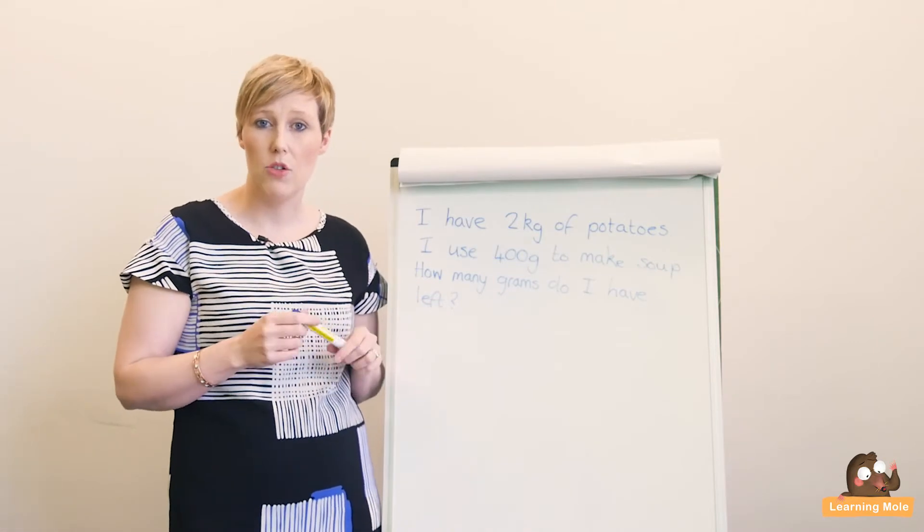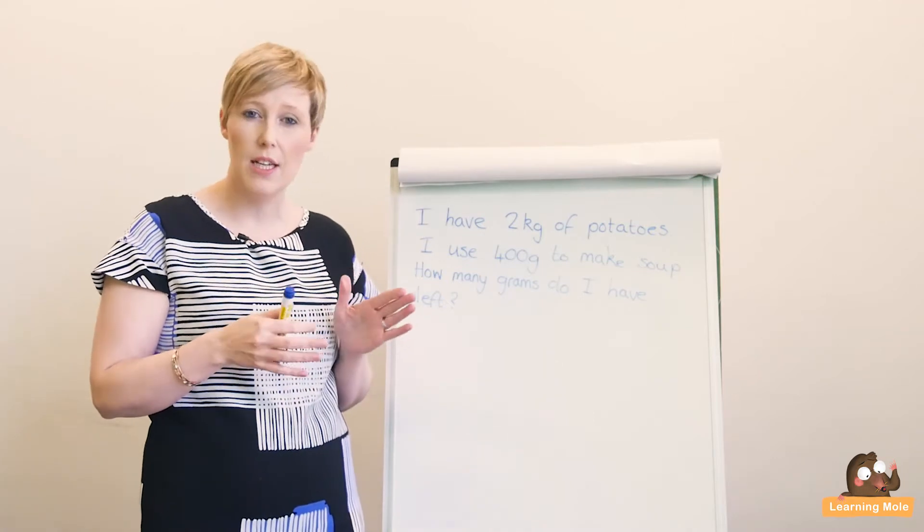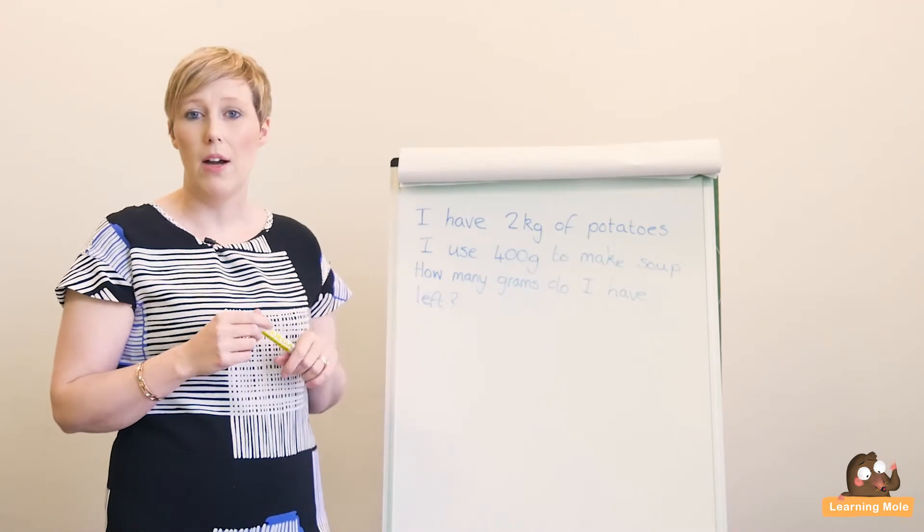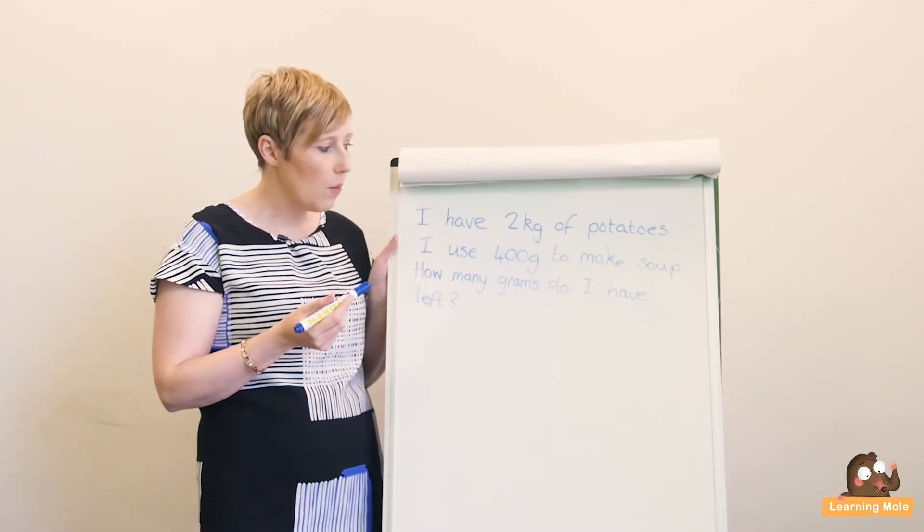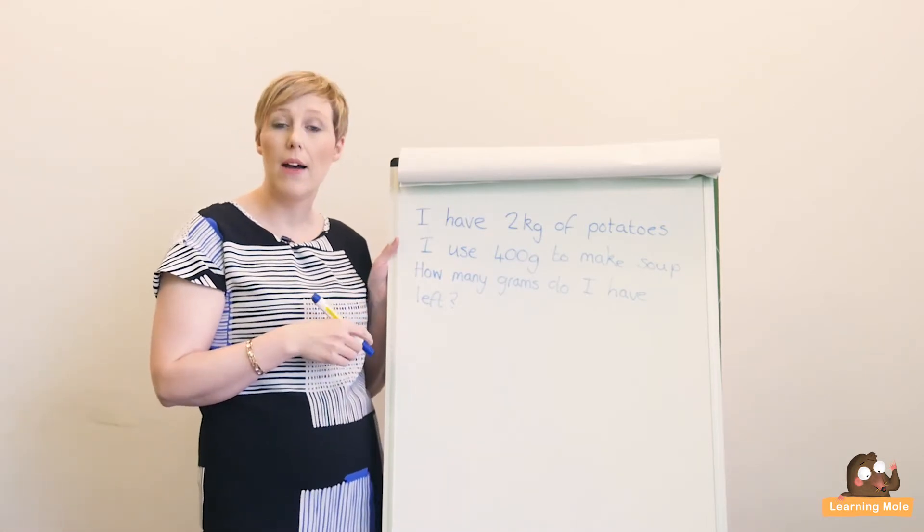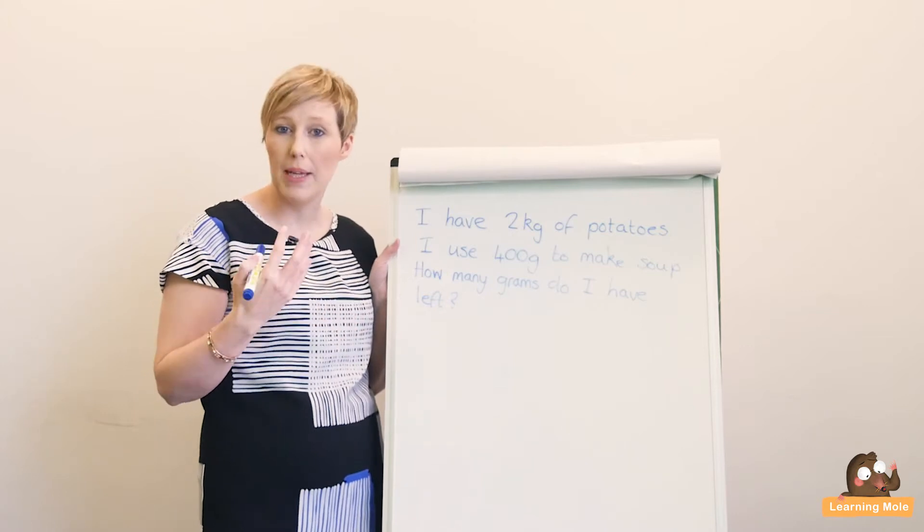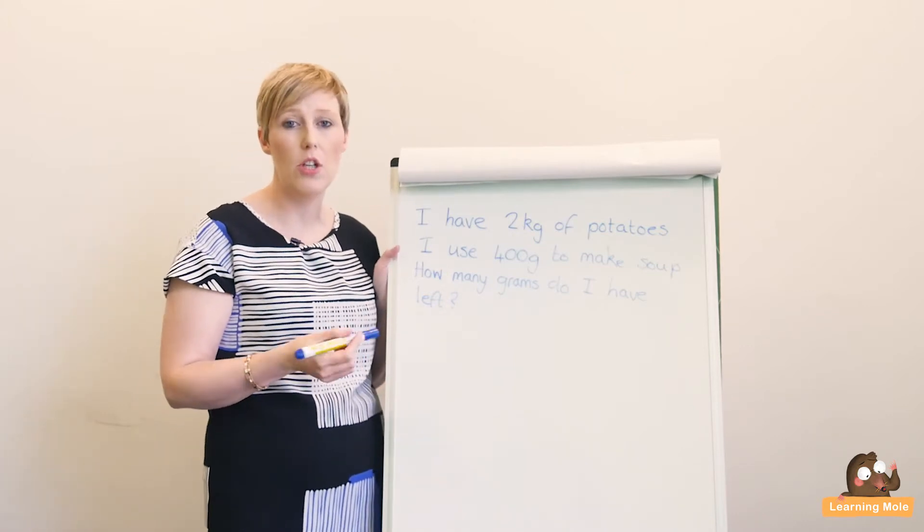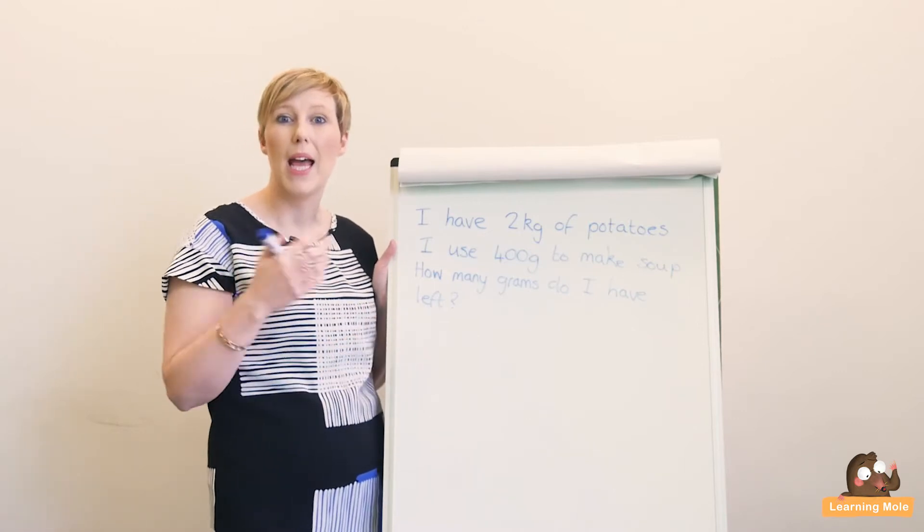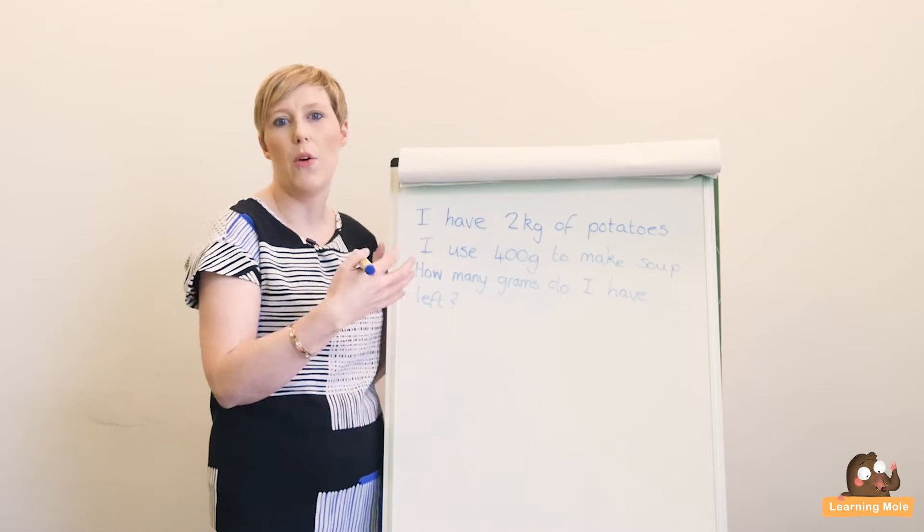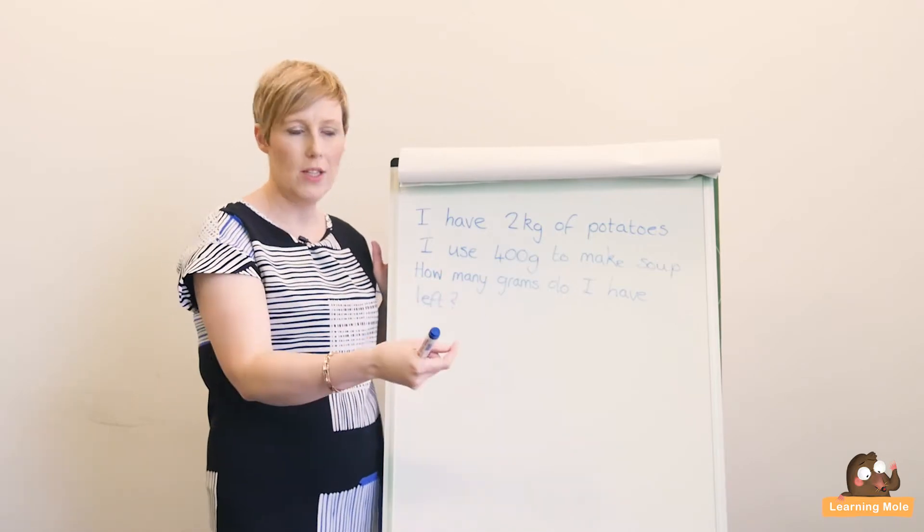We're focusing on Key Stage 2, that seven to eight-year-old to eleven age range, and how they would be approaching these. The first example we're starting with is something your child would be faced with probably at the end of Key Stage 2. I will take a step back after this and do a slightly simpler one as well, but I want to give you an essence of what you're aiming for.